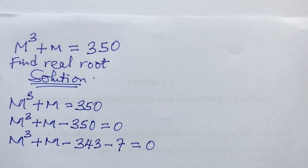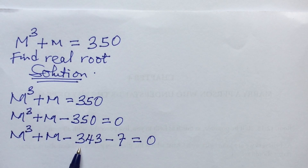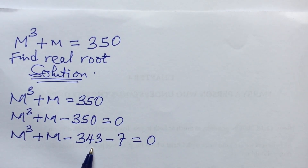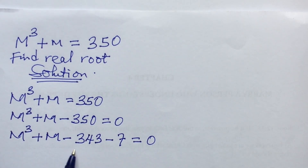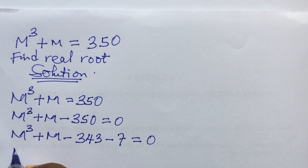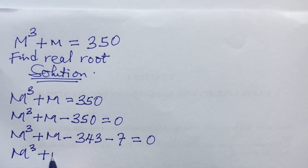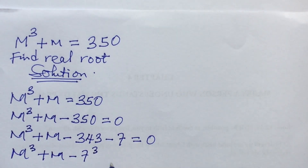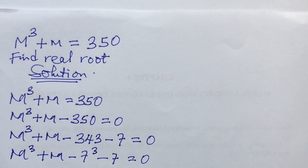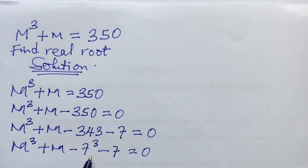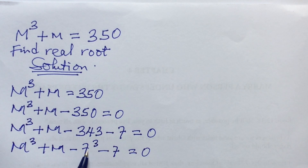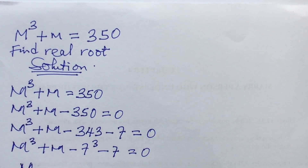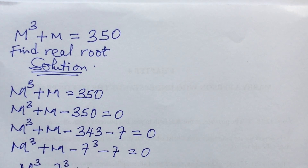Since 343 is 7 to the power of 3, we rewrite the expression as m³ + m - 7³ - 7 = 0. Now we bring together terms with the same power: m³ minus 7³, plus m minus 7, equal to zero.